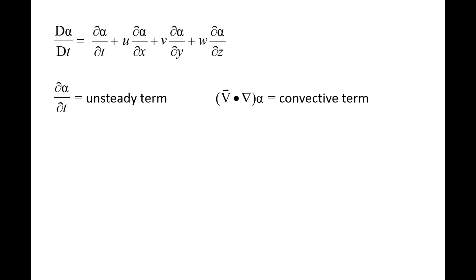The partial alpha/partial t term is often called the unsteady term because it is related to the alpha field varying in time. Steady state conditions occur when the alpha field is constant in time. The v dot del alpha term is often called the convective term because it is related to the alpha field varying in space.